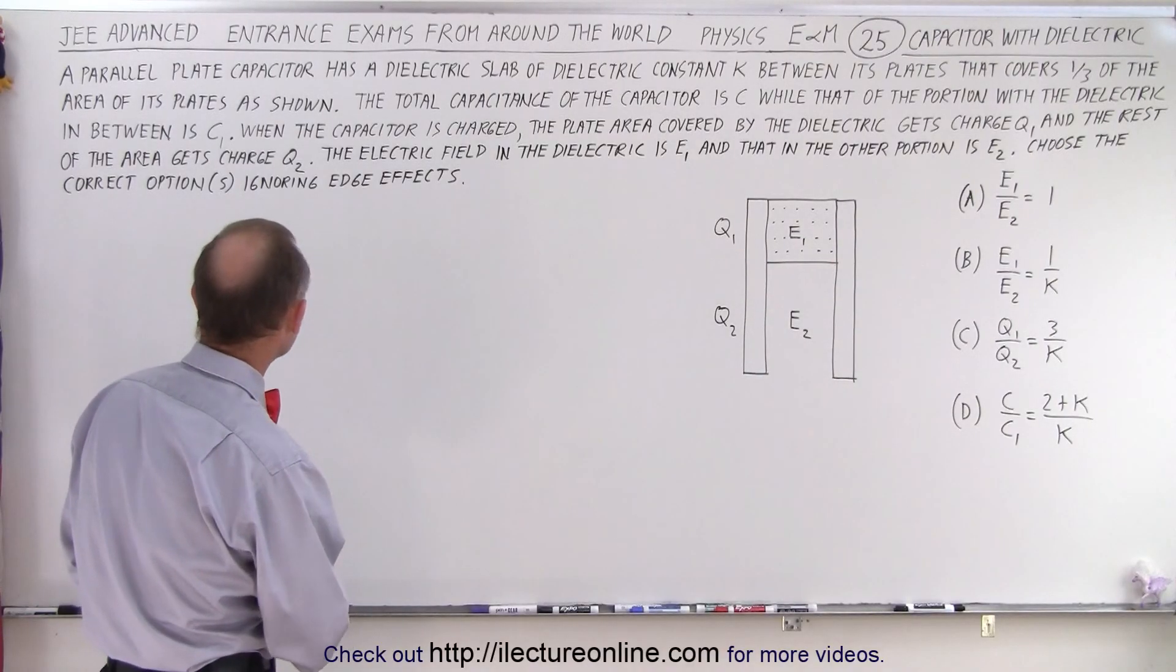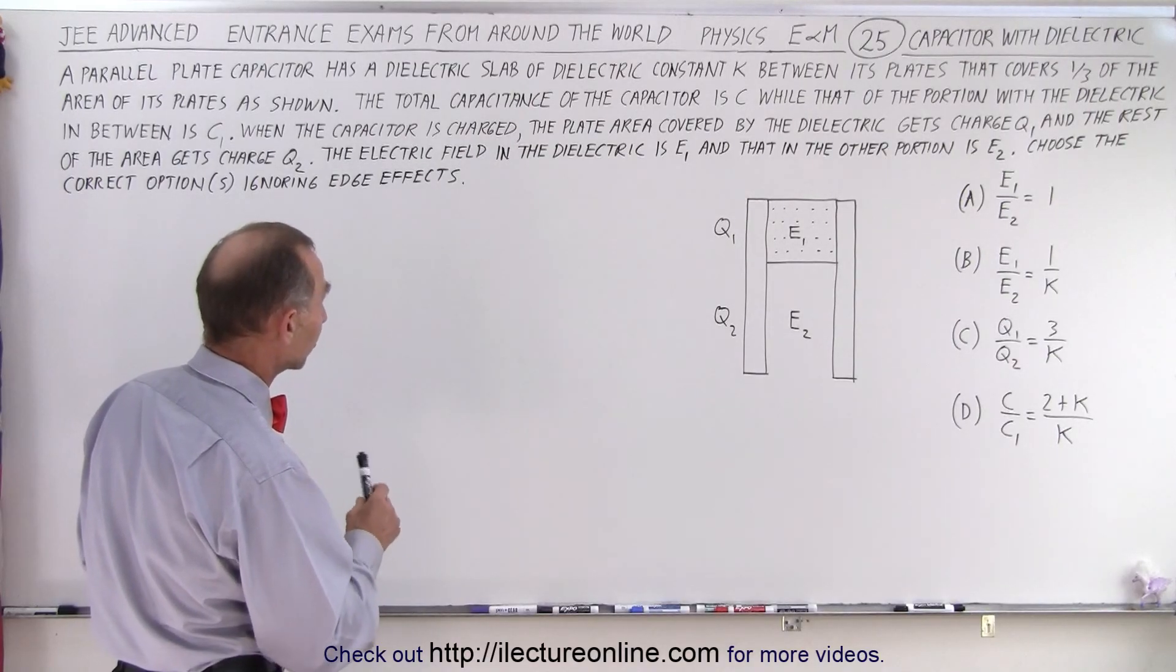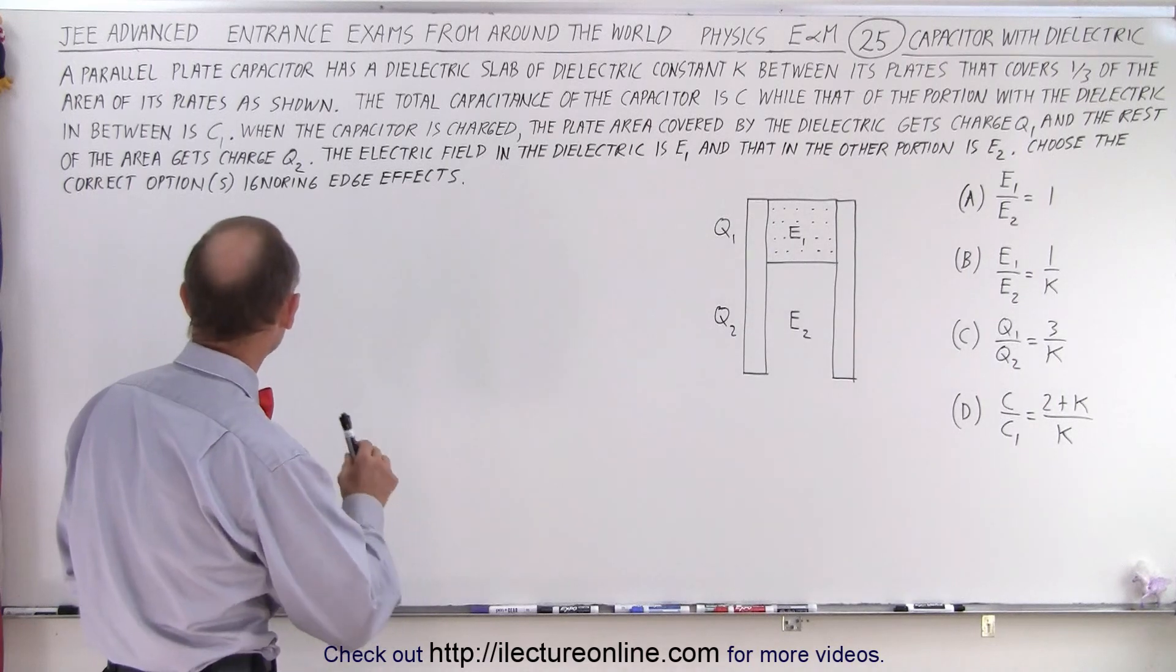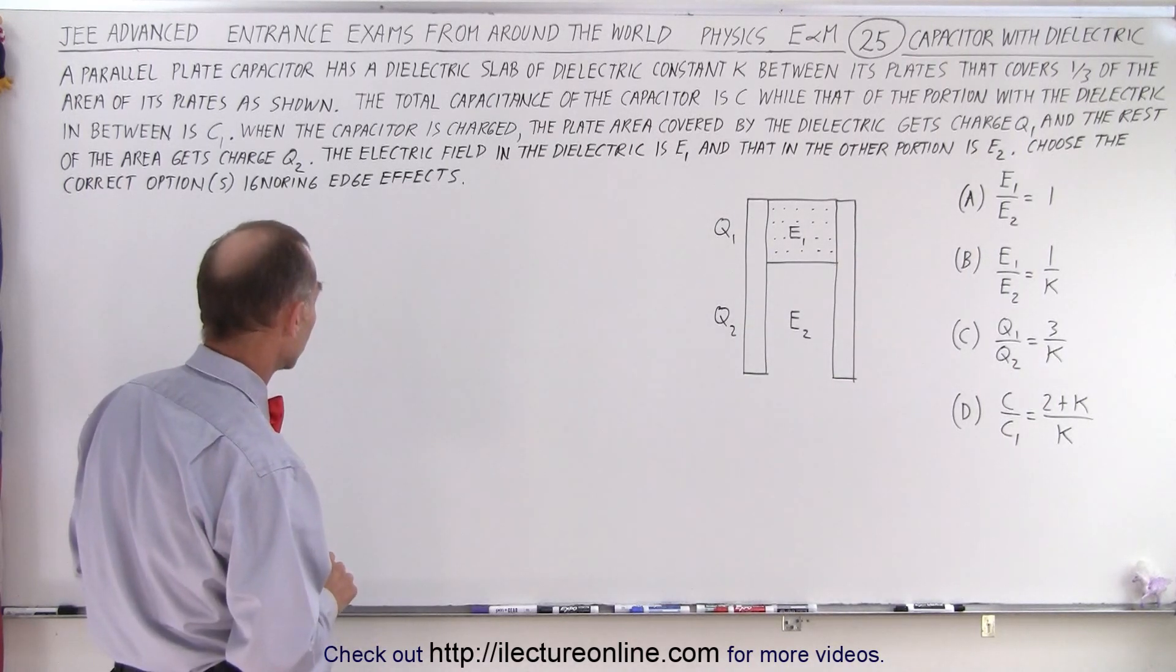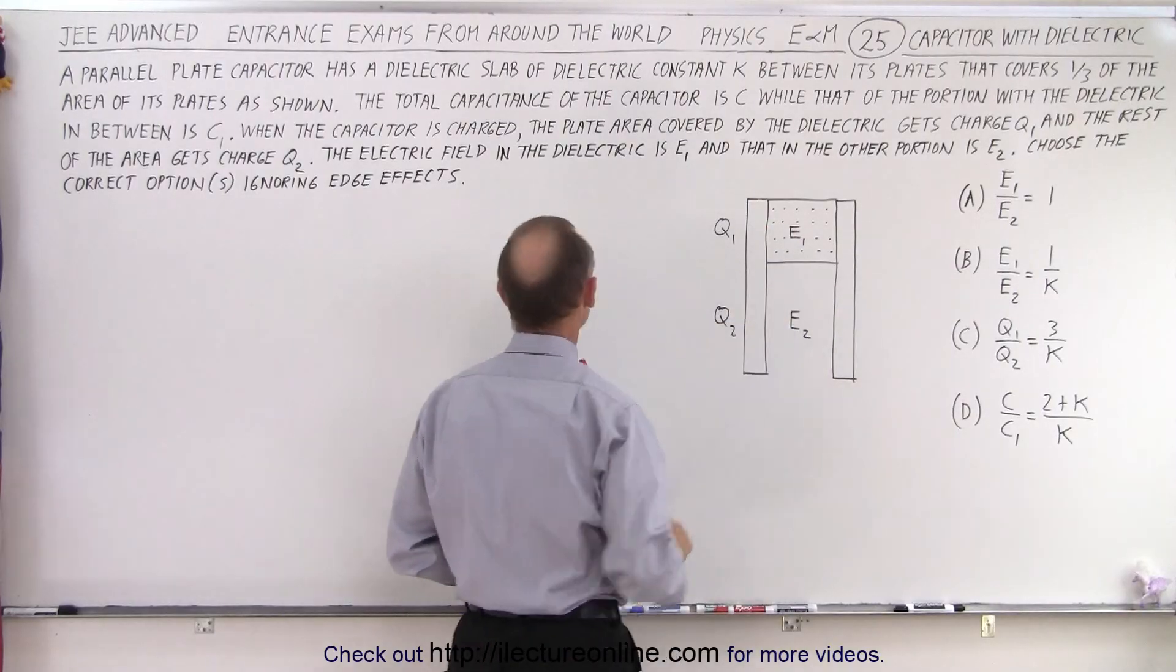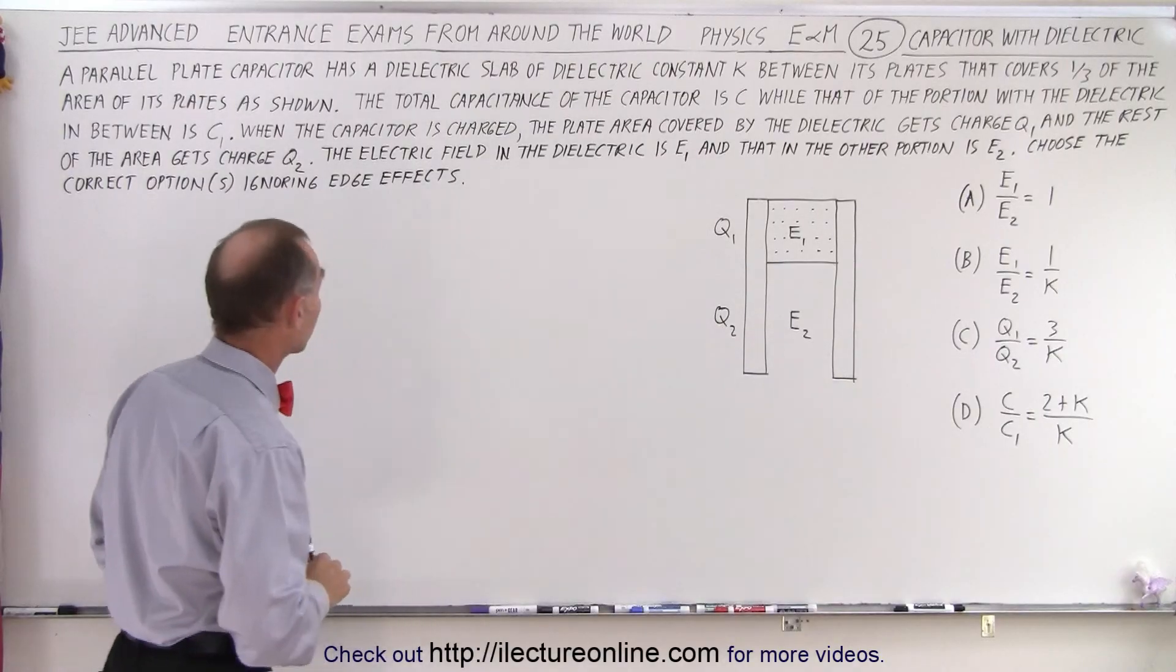A parallel plate capacitor has a dielectric slab of dielectric constant K between its plates that covers one-third of the area of its plates as shown. So this only covers one-third area. This two-thirds of the area does not have a dielectric.